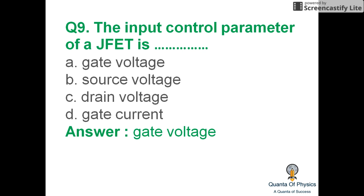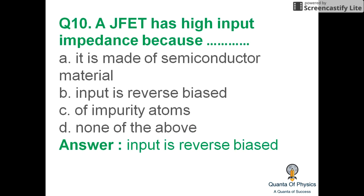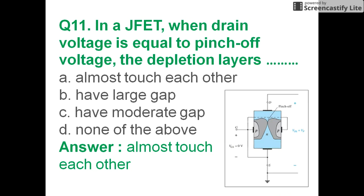The input control parameter of the JFET is gate voltage, meaning gate voltage controls the input parameter of the JFET. FET is a voltage control device. A JFET has high input impedance because the input is reverse biased.